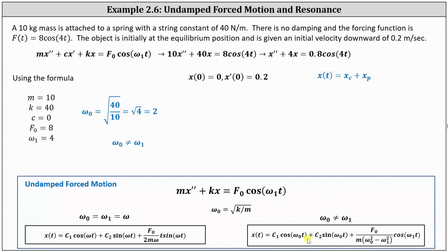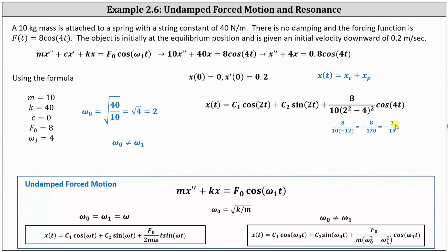We now perform substitution into the formula for the general solution, substituting 2 for ω₀, 8 for F₀, 10 for m, 2 for ω₀ again, and 4 for ω₁. Simplifying the coefficient of cos(4t) gives −1/15. Therefore, the general solution in simplified form is x(t) = C₁cos(2t) + C₂sin(2t) − (1/15)cos(4t). The angle 2t in the first two trig functions corresponds to ω₀·t, and the angle 4t in the last term corresponds to ω₁·t.